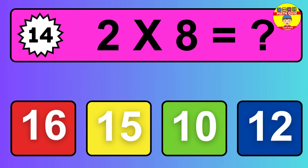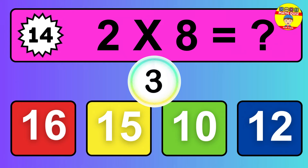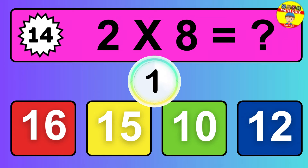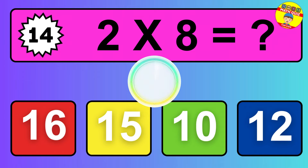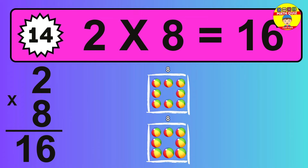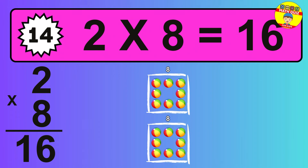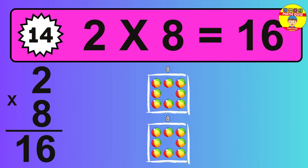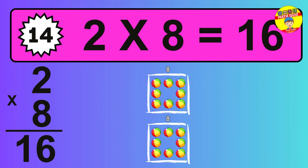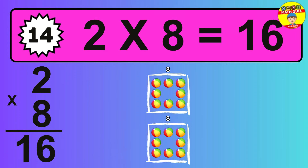Question 14. 2 times 8 equals what? The answer is 2 times 8 is 16. To calculate, we have 2 groups with 8 balls each one. So, how many balls do we have? 16 balls.